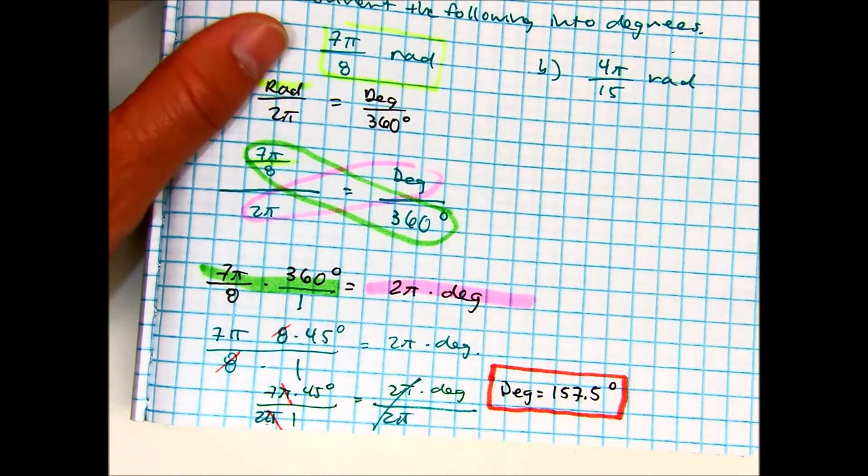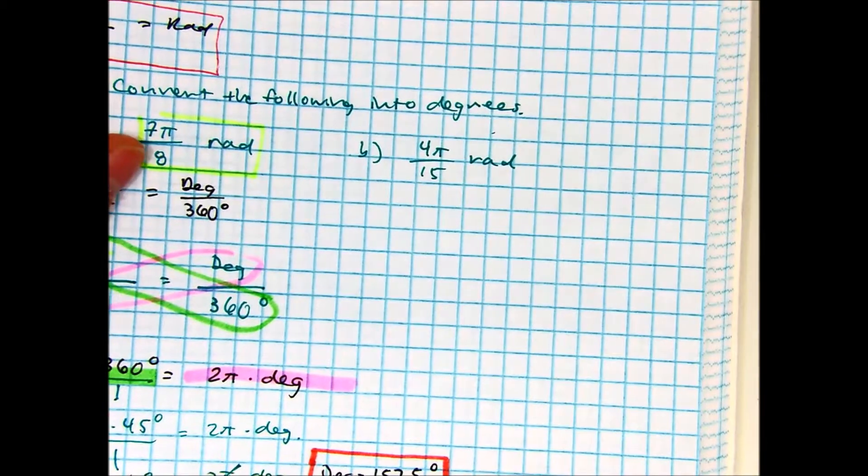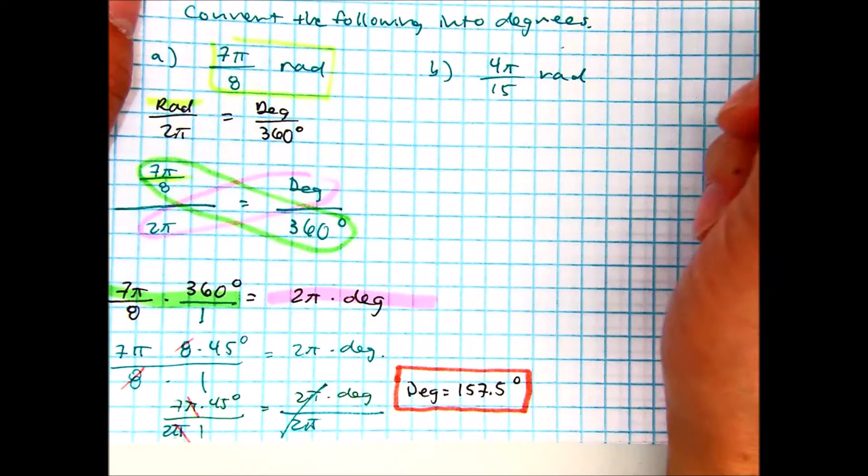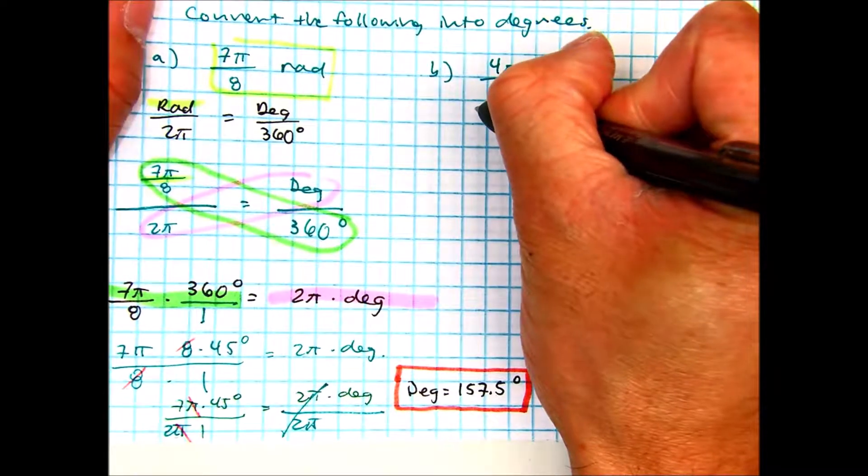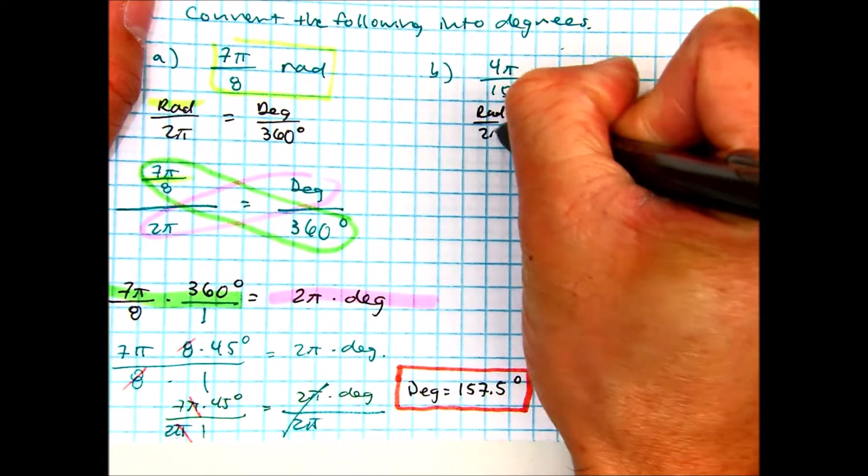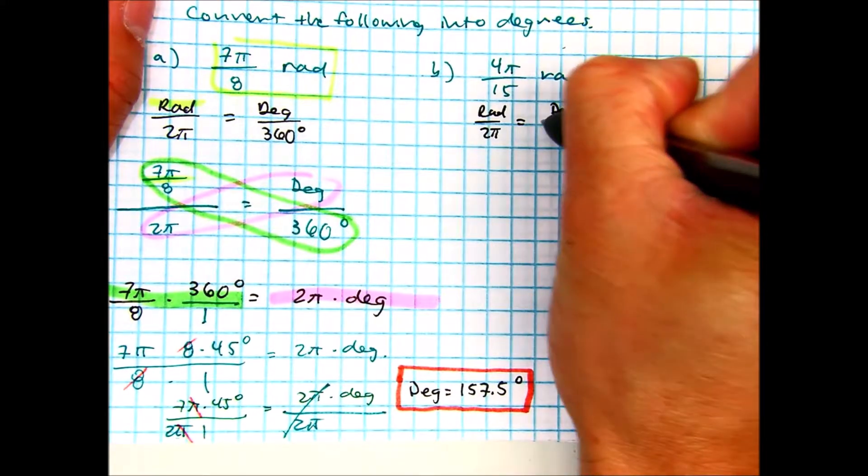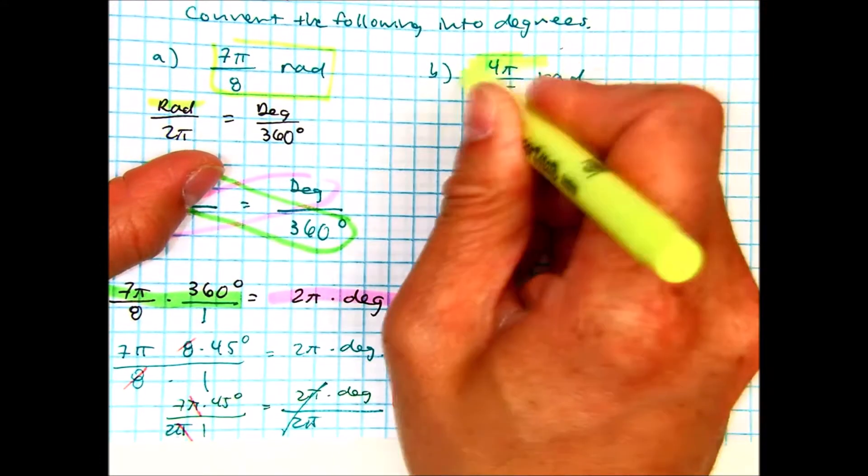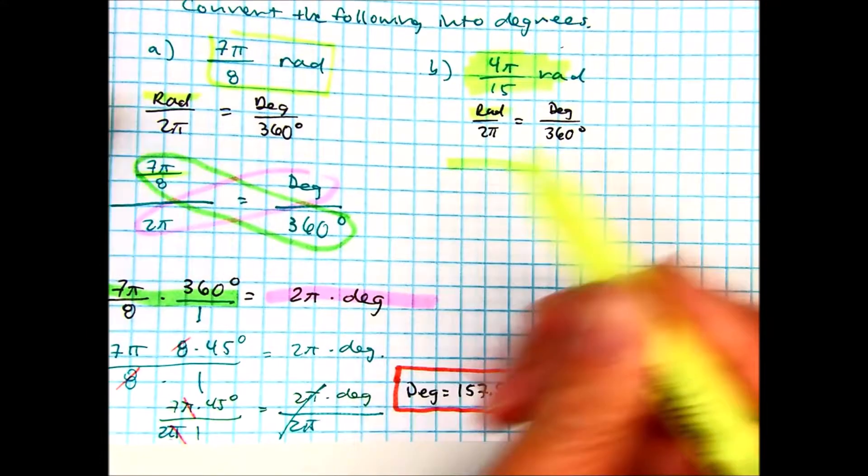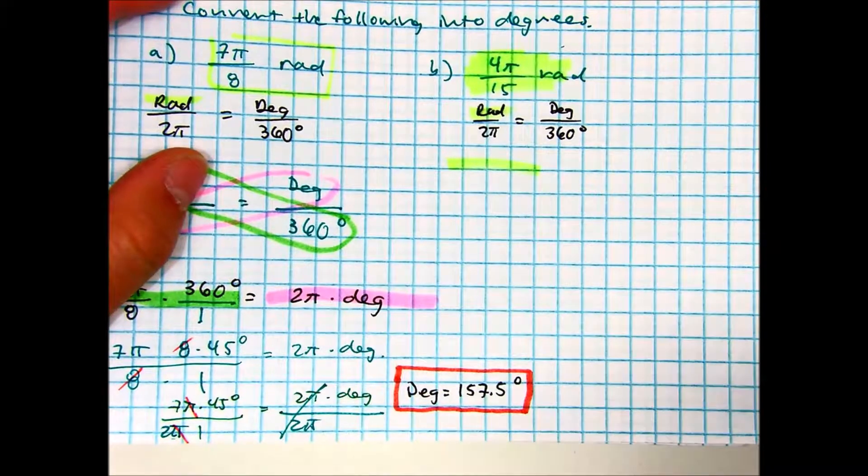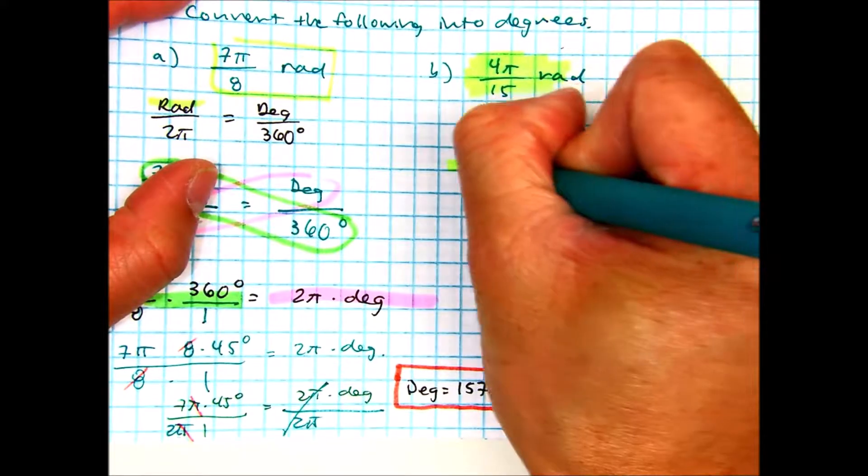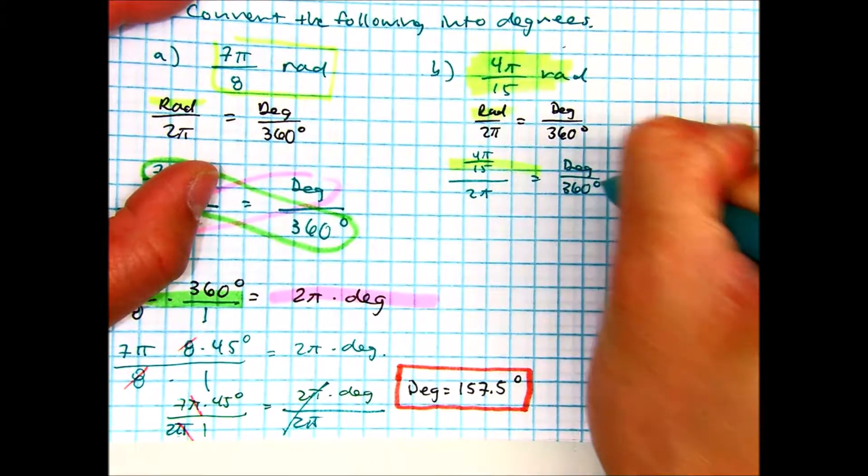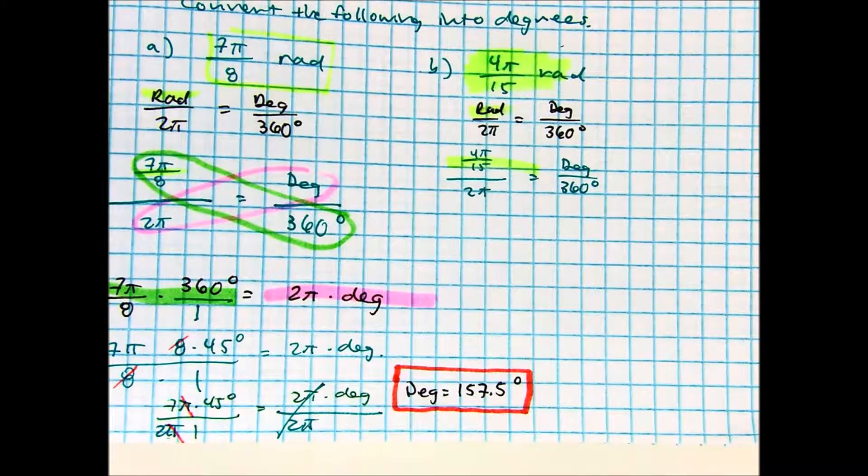Let's try another one together. Class, what is our awesome proportion? So, now I'm putting the, where it says rad. 4π over 15 over 2π equals degrees over 360 degrees. Partner A, tell partner B, what do we do next?